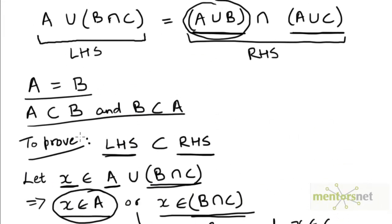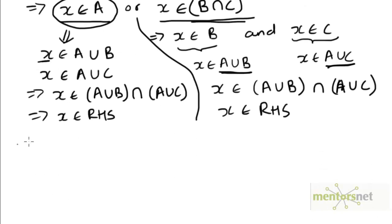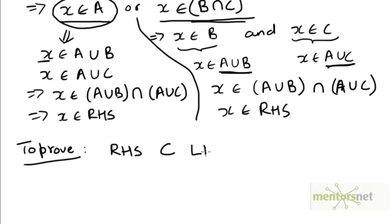We have proven that the left-hand side is a subset of the right-hand side because we picked an arbitrary element on the left-hand side and showed that it must be an element of the right-hand side. Now we have to prove the converse — that an arbitrary element drawn from the set on the right-hand side must be an element of the set on the left-hand side. So we have to prove that the right-hand side is a subset of the left-hand side.